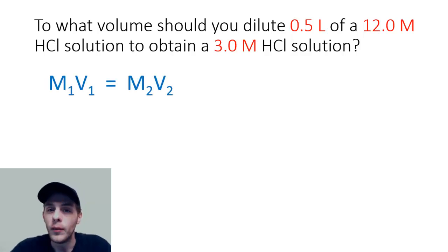In this case we're going to use that M1V1 equals M2V2. At this point we have to identify what we have and what we're trying to find. It looks to me like the 0.5 liters and the 12.0 molar, that is the volume and the molarity of the concentrated solution, and then the 3.0 molar, that is the concentration or the molarity of the dilute solution.